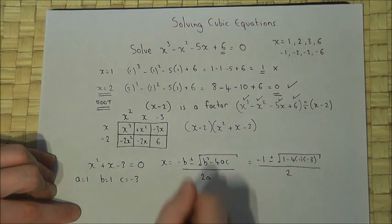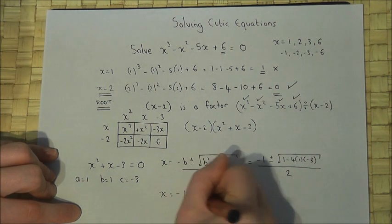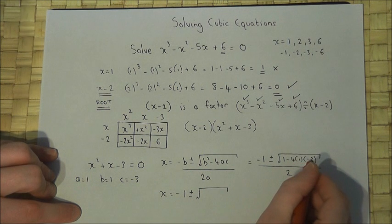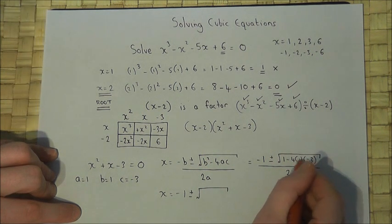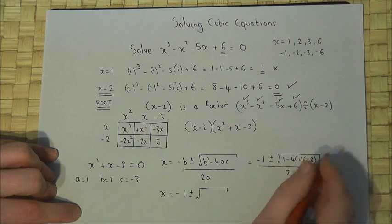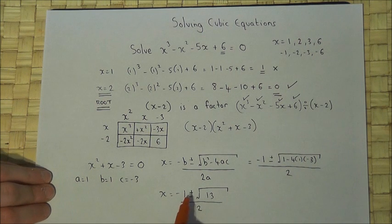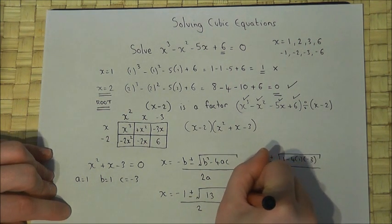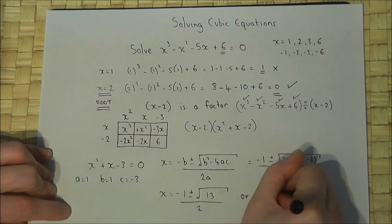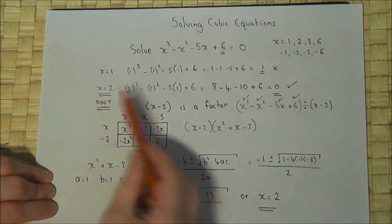And then sub the values in, I get minus 1 plus or minus the square root of b squared which is 1, take 4 times a times c, all over 2 times a, all over 2. So x will equal minus 1 plus or minus the square root of, 4 times 3 is 12. There are two negatives so it becomes plus 12. So 1 plus 12 is 13, all over 2. So these are two of the roots, left as a third, and also x equals plus 2 as given in the question.